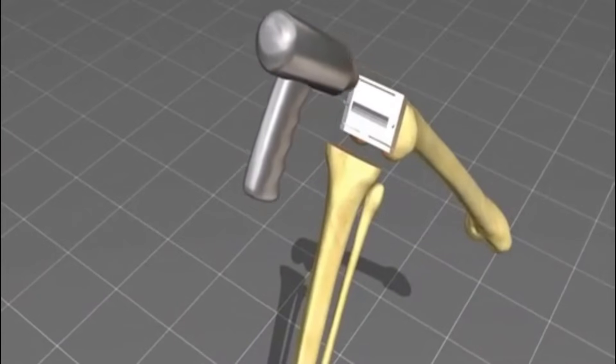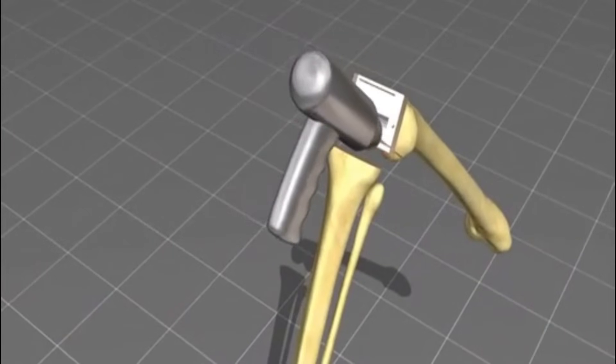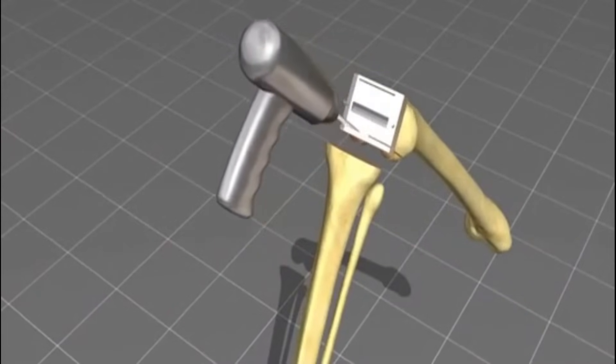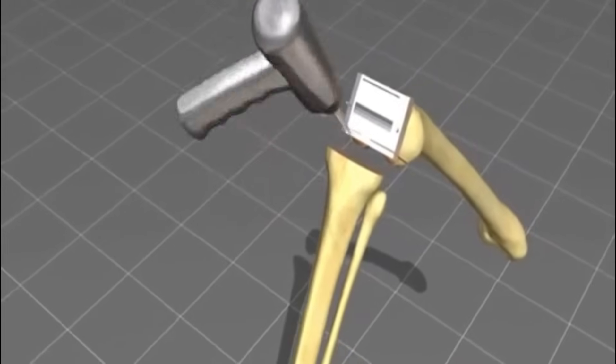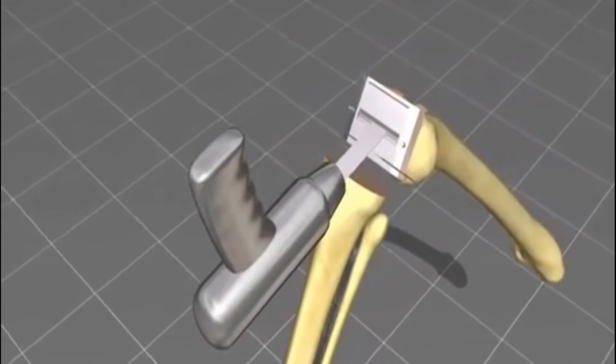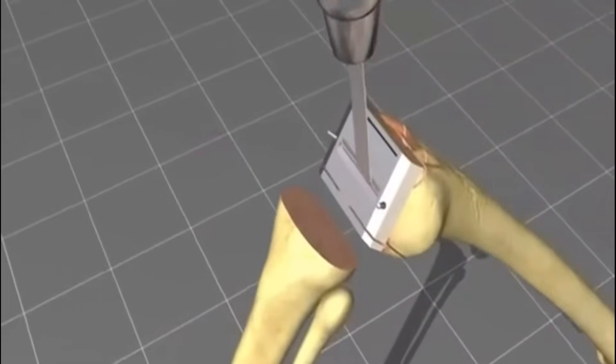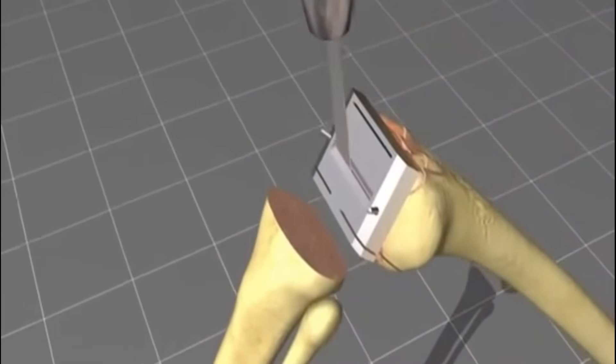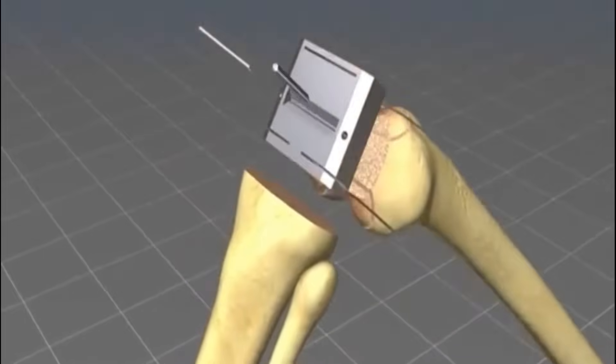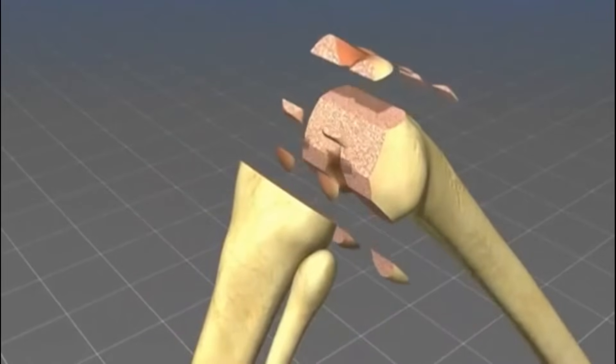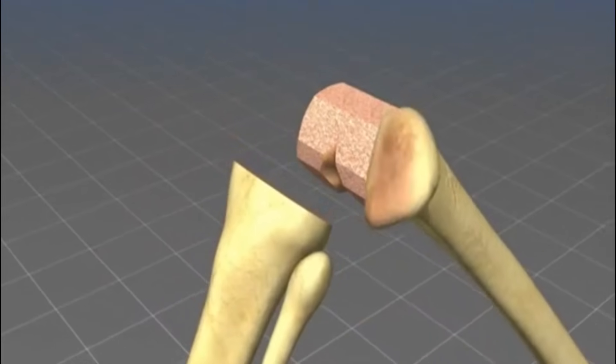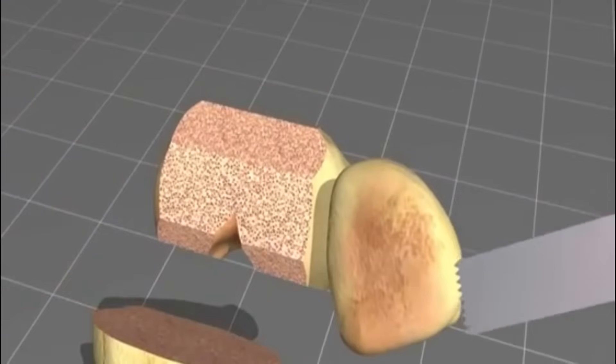The next saw block is used to remove the anterior and posterior part of the femoral condyles, as well as some minor diagonal cuts are performed. After removal of these bone parts, the femoral side is ready to take the prosthetic device.